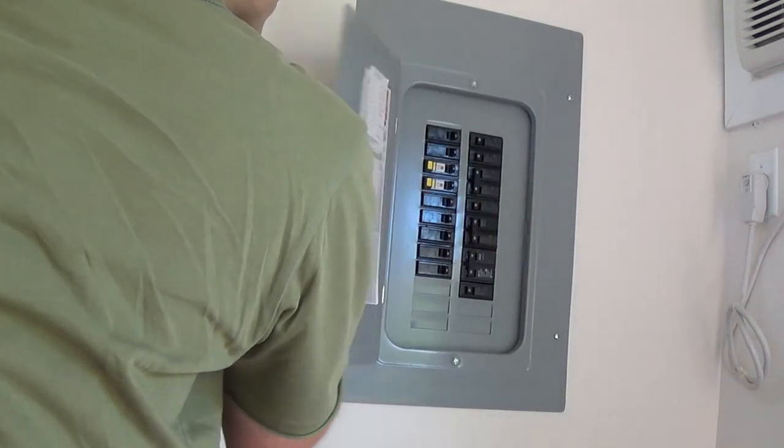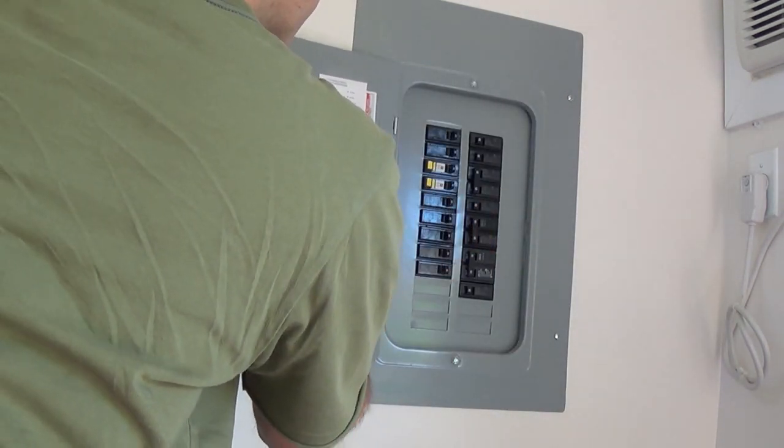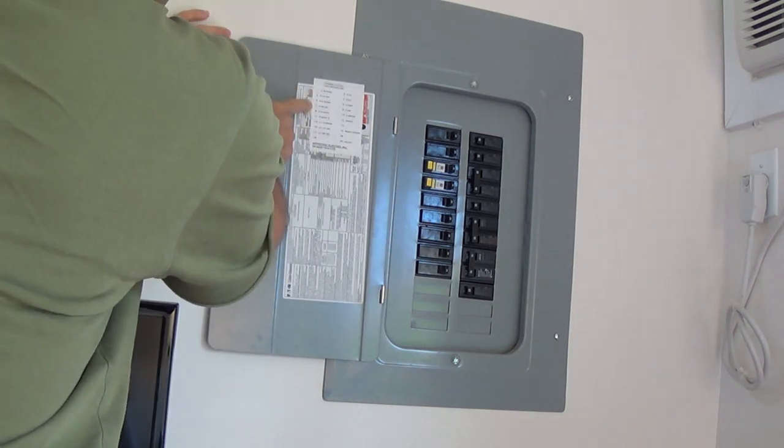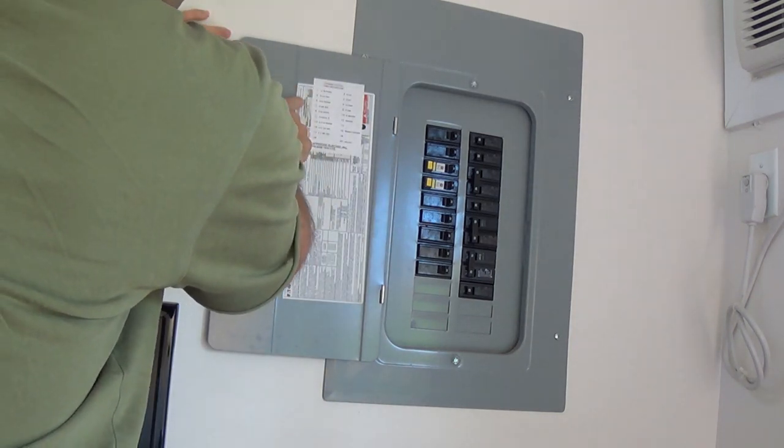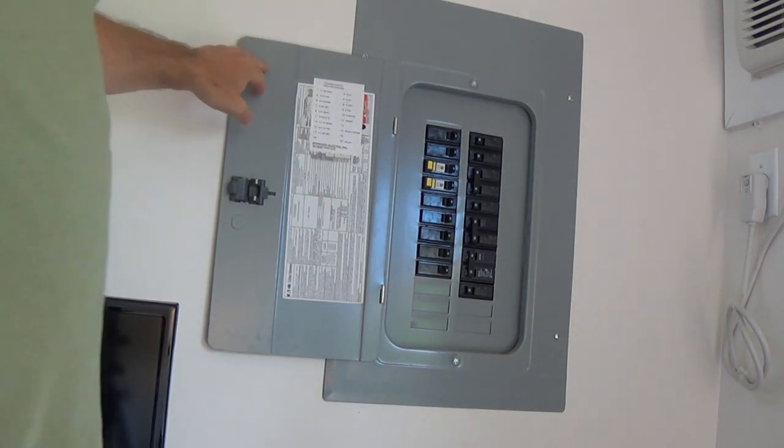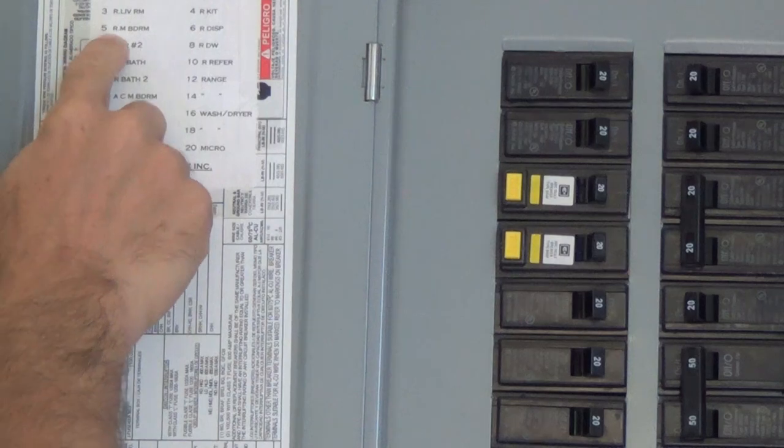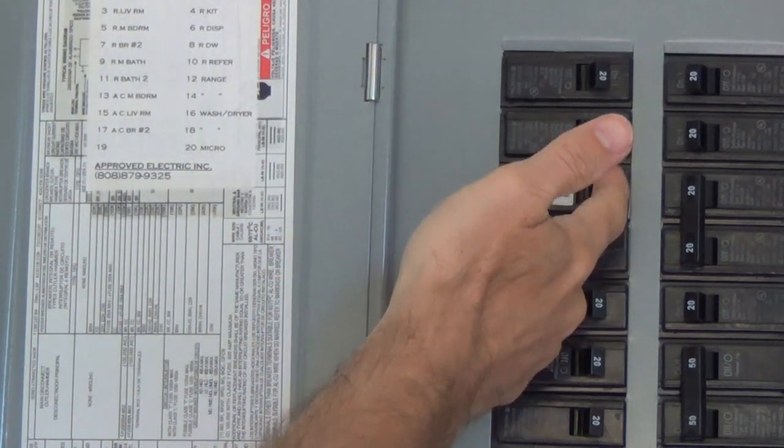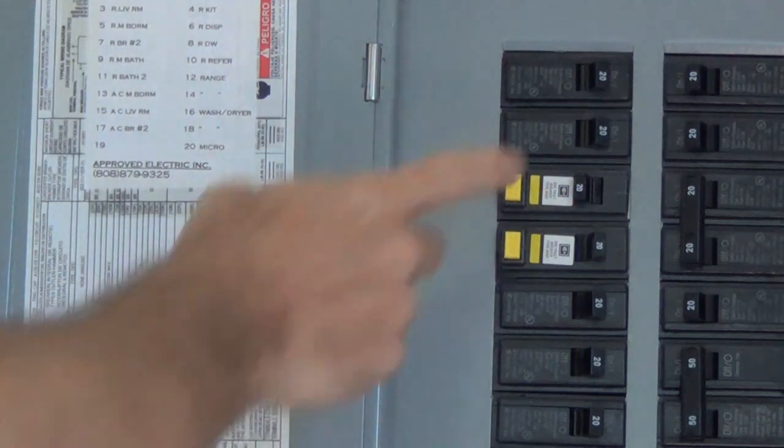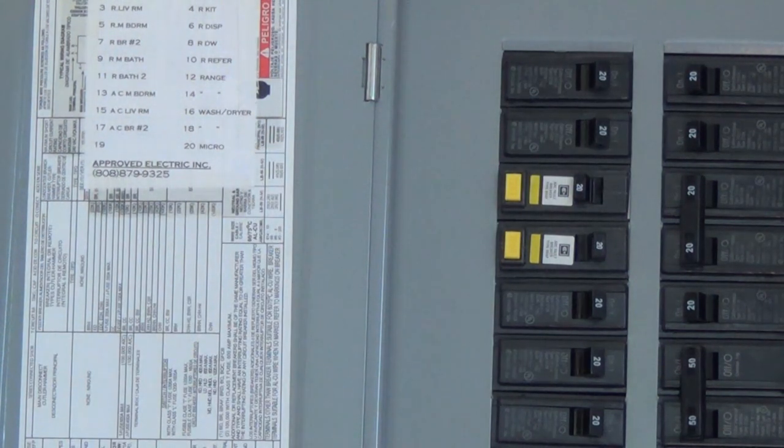We'll just open this up and figure out which breaker to turn off the lights. Let me look through this and see which one. So it looks like this one is for the master bedroom. I'll look at the light and turn this off, and sure enough, it turns off. So we know the power is off, so we're good there.